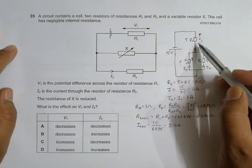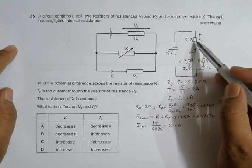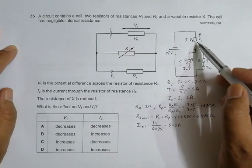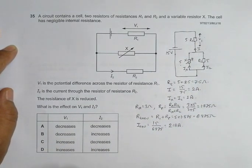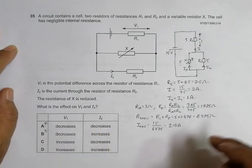Now, as it increased, if the overall current increases here, the PD V1 should increase. So that means our choice, this and this disqualify, only C and D remains.